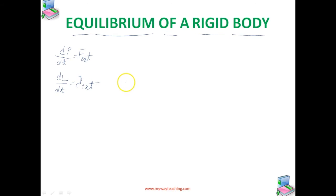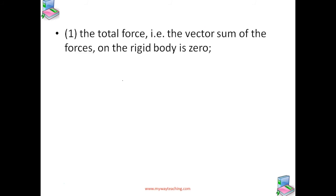A rigid body is said to be in mechanical equilibrium if both its linear momentum as well as angular momentum are not changing with time. Or equivalently, the body has neither linear acceleration nor angular acceleration, which means the total force — that is the vector sum of forces on the rigid body — is zero.